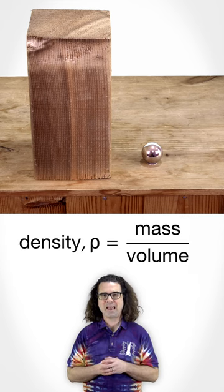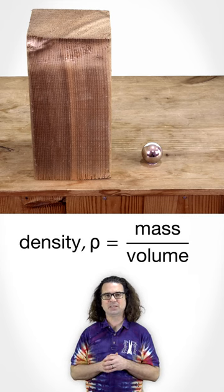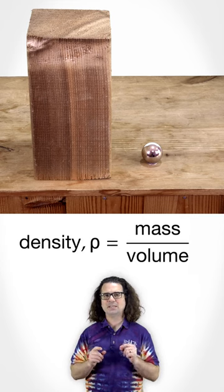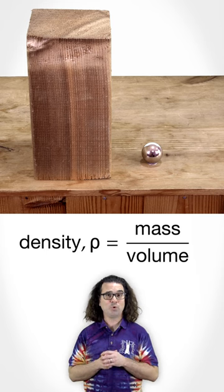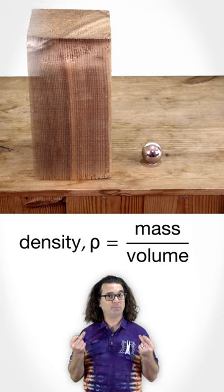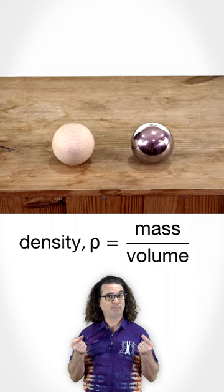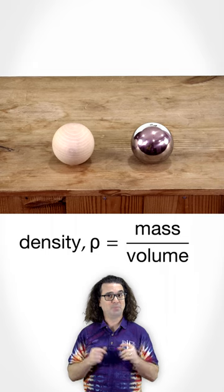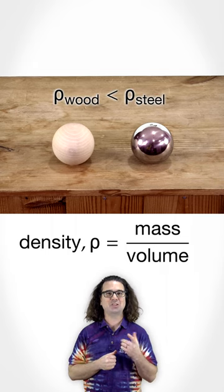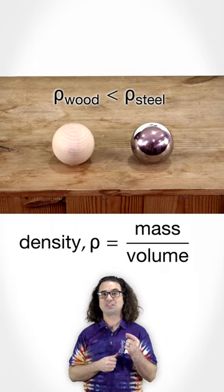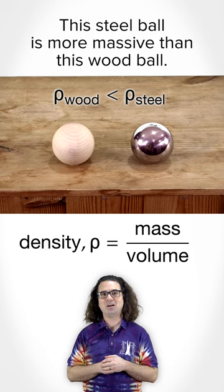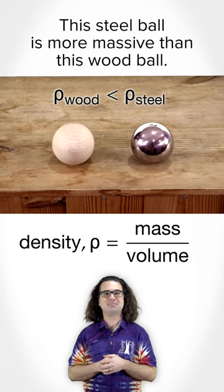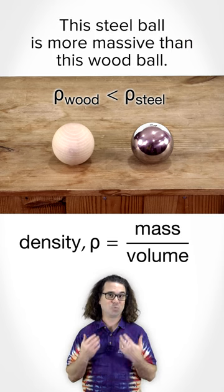Density equals mass divided by volume, which means if we instead have a steel ball and a wood ball with equal volumes, then because the density of steel is larger than the density of wood, this steel ball is more massive than this wood ball.